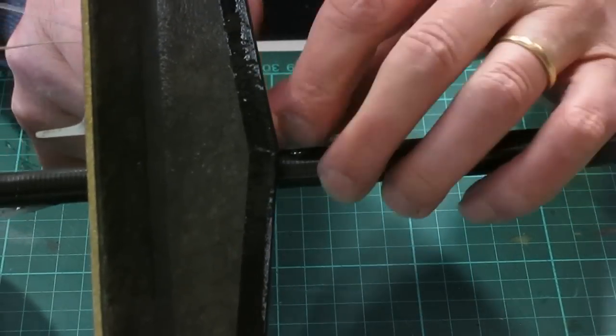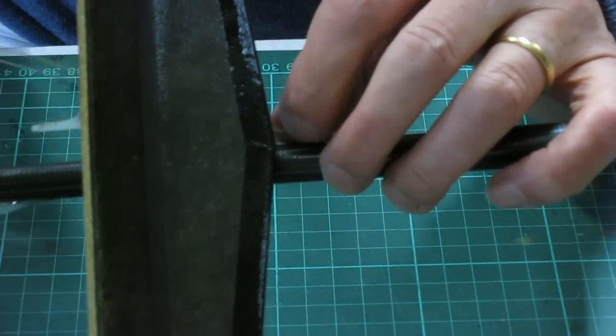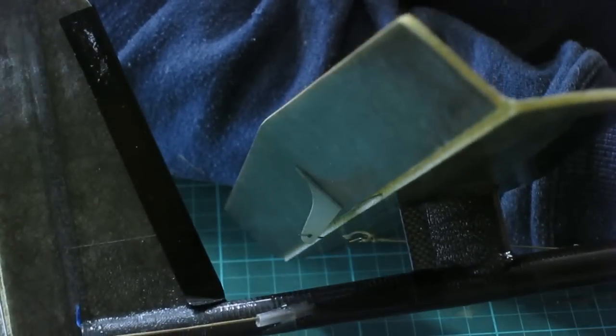And I'm just following the same procedure for the elevator. Threading the control line through. And that's the tail end done. Time to connect up the servo now.